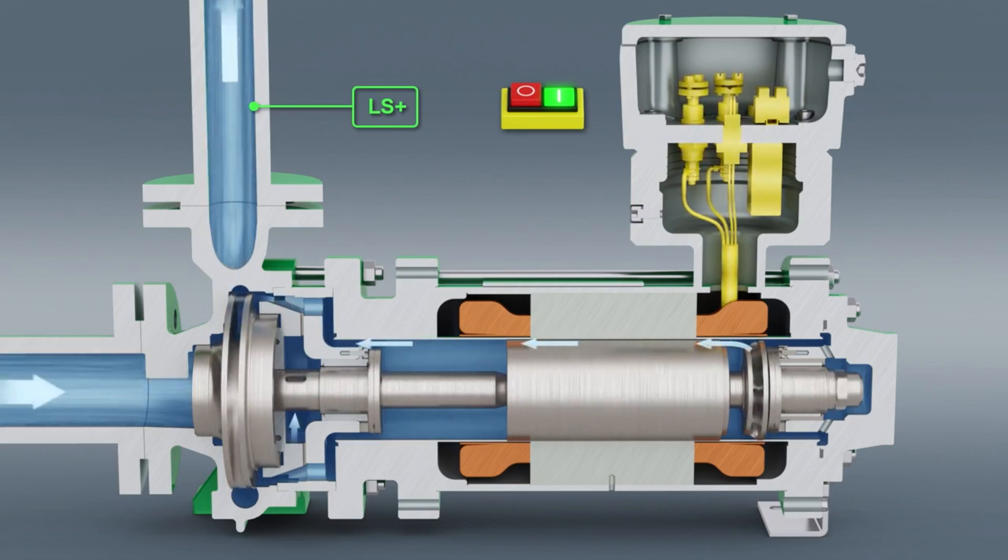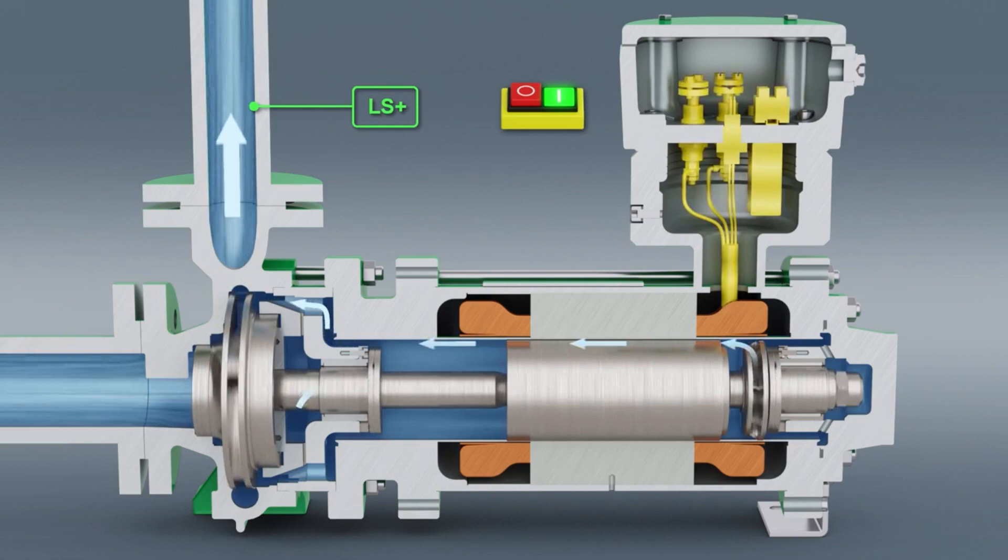The auxiliary impeller is used to overcome pressure loss and enables pumping liquefied gases with an extremely steep vapour pressure curve.